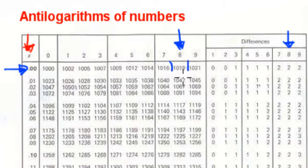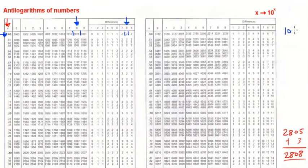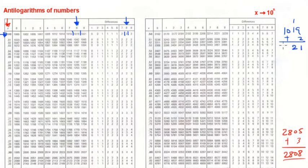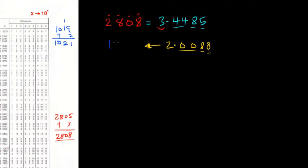Now for 0, 0 under 8, we'll mark the number. This is the number: 1, 0, 1, 9. For 0, 0 under 8, the difference of 8 is 2. We'll add 1, 0, 1, 9 and 2. 9 plus 2 is 11 — write down 1, carry 1. This gives us 1, 0, 2, 1. This is the number that has this particular logarithm. Because we have 2 as an integer, we must have 3 numbers before the decimal point. I'll just put my decimal point here.